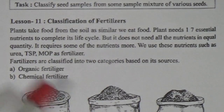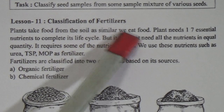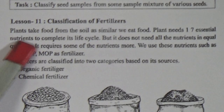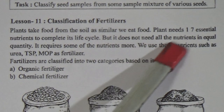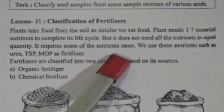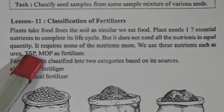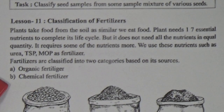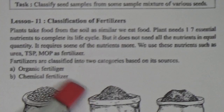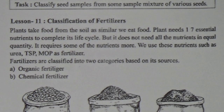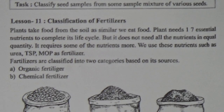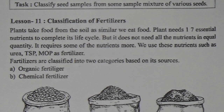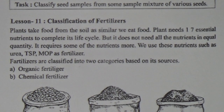Plants take food from the soil just as we eat food. Plants need 17 essential nutrients to complete their life cycle, but they do not need all nutrients in equal quantity. We use nutrients such as urea, TSP, and MOP as fertilizers. Fertilizers are classified into two categories based on their sources: 1. Organic fertilizer. 2. Chemical fertilizer. Organic fertilizer is produced from the bodies of living beings — from debris of plants and animals — such as cowdung, compost fertilizer, green manure, oil cake, etc.